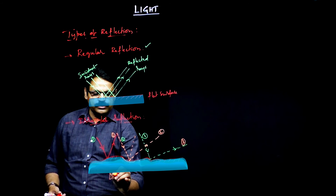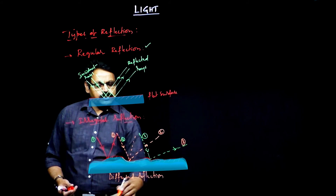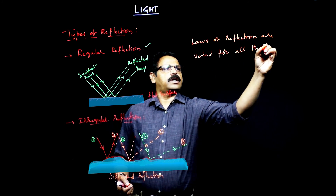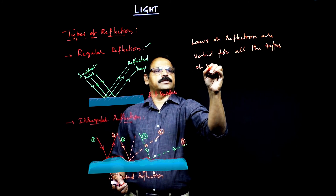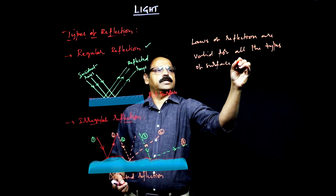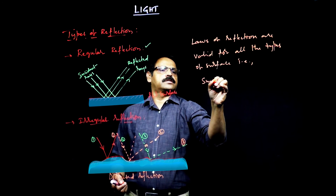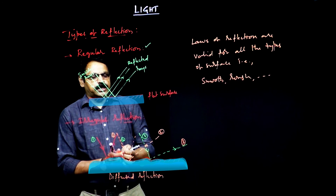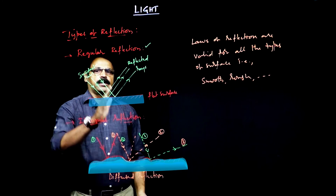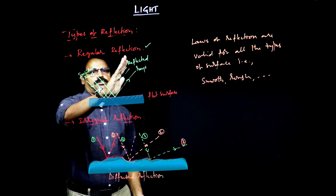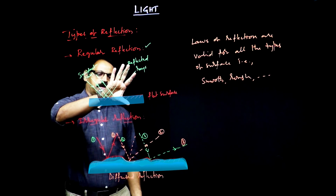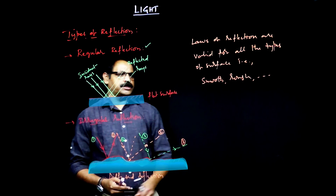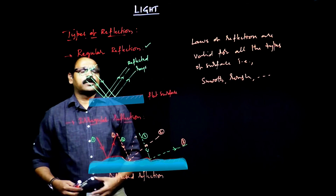This is also called diffused reflection. But the laws of reflection are valid for all types of surfaces — whether it is a smooth surface or a rough surface or whatever it may be, the laws are valid. The only thing you need to remember is that reflection can be either regular or irregular. If the reflected rays are parallel to each other as with the incident rays, then you call it regular reflection. If they are not parallel, then it is called irregular reflection. This is what you need to remember in case of types of reflection.